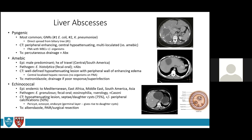Amoebic abscesses are suspected with any recent travel to Central or South America, particularly equatorial regions. The causative agent is Entamoeba histolytica. Unlike pyogenic abscesses, aspiration yields no organisms — it's a sterile sample. Entamoeba histolytica is not found in stool specimens, but diagnostic antibodies are present in almost all patients. CT shows a hypo-attenuating lesion with peripheral enhancing edema. Treatment is a 10-day course of metronidazole; drainage is reserved for superinfection or poor response to antibiotics.